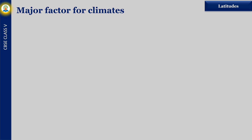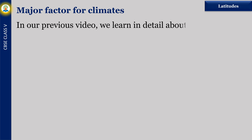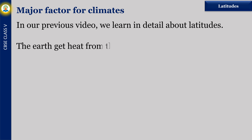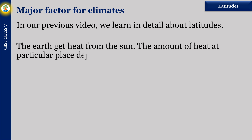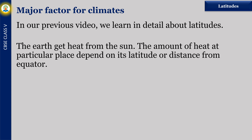In our previous video, we learned in detail about latitudes. The link is given above. The earth gets heat from the sun. The amount of heat at a particular place depends on its latitude, or distance from the equator. We can see sun rays reaching the earth at different locations.